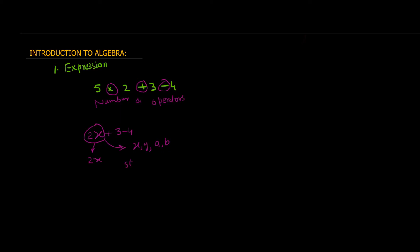These letters stand for numbers. In this case, X stands for the number 5 — we know this number. But sometimes we don't know this number. If I have an algebraic expression like 5X minus 7, I don't know what X is, and I cannot find X from an expression alone — until the expression becomes an equation. And how does it become an equation? If I put an equal sign, any statement which has an equal sign becomes an equation.